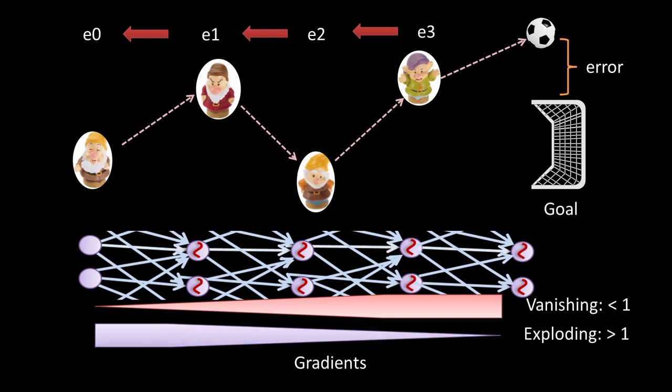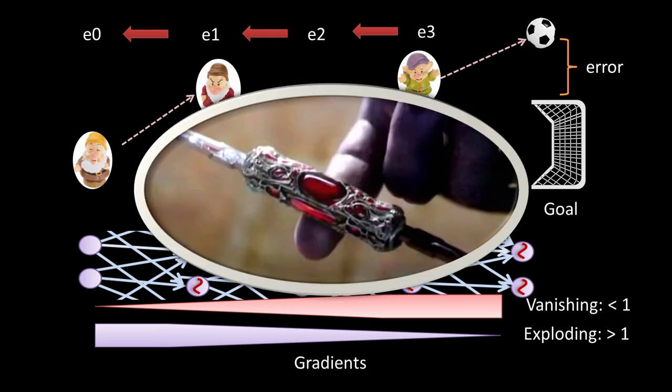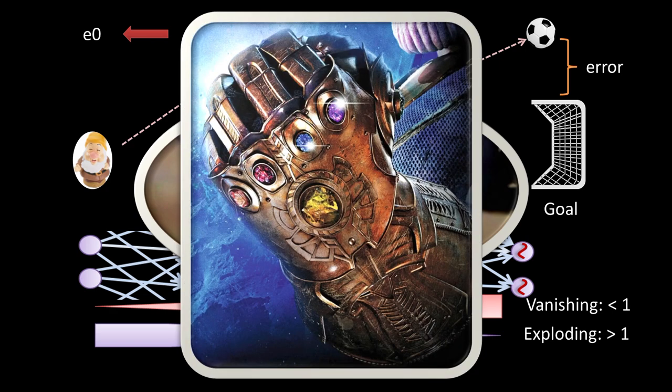Or the opposite — you are conservative in blaming errors, and by the time you reach the early layers all the remaining errors are blamed on them. This is called exploding gradients, where the gradients become uncontrollably large. Mathematically, the two problems happen when repeatedly multiplying values smaller or larger than one. Perfectly balancing this is quite challenging and requires some extra tricks.